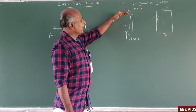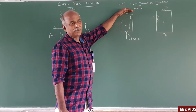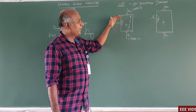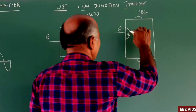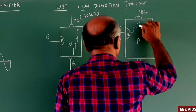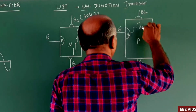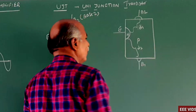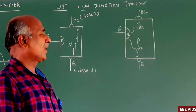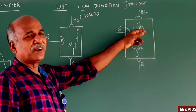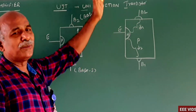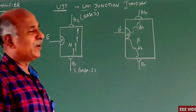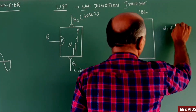The emitter junction is nearer to B-2. B-2 distance is less compared to B-1. The distance between B-1 and the junction is more than between B-2 and the junction. So D-1 and D-2 represent these distances.